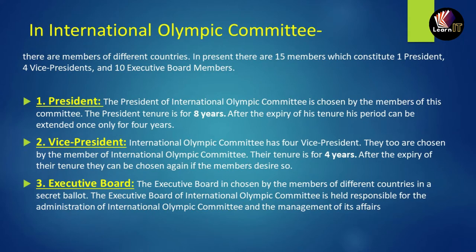The last is the executive board. The executive board is chosen by the members of different countries in a secret ballot. The executive board of the International Olympic Committee is held responsible for the administration of the Olympic committee and the management of its affairs.